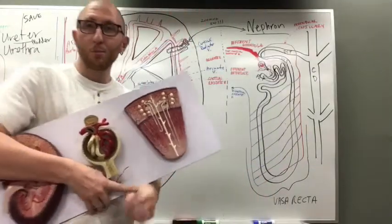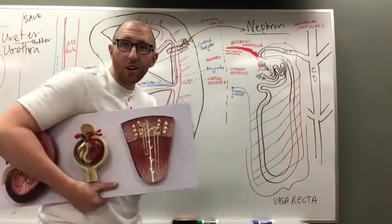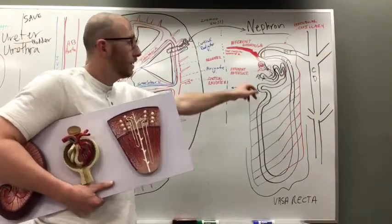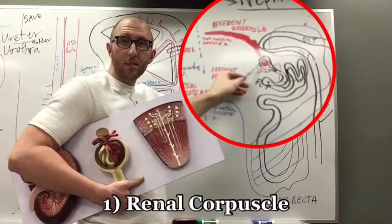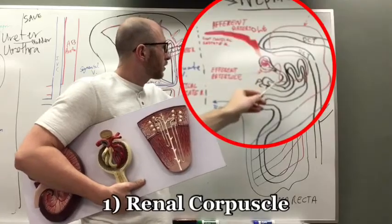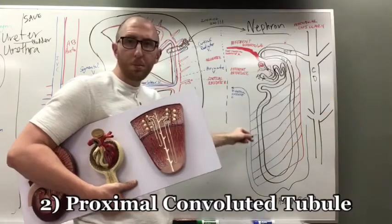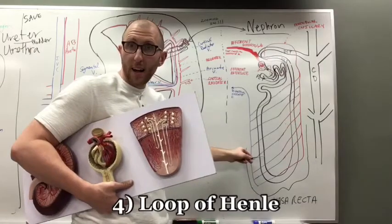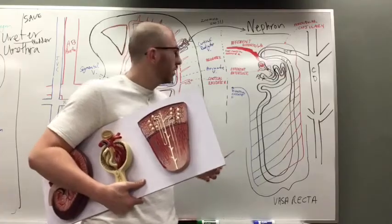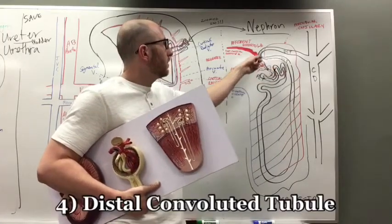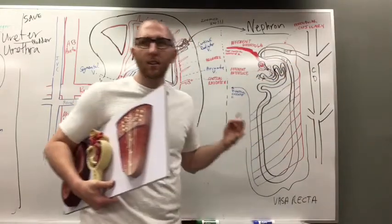I've drawn this on the board. You can see the renal corpuscle, the proximal convoluted tubule (PCT), the loop of Henle — the black loop is the loop of Henle, also called the nephron loop — and then it comes up to the DCT and over to the collecting duct, which is the fifth part of the nephron.